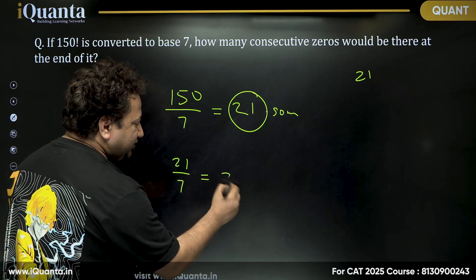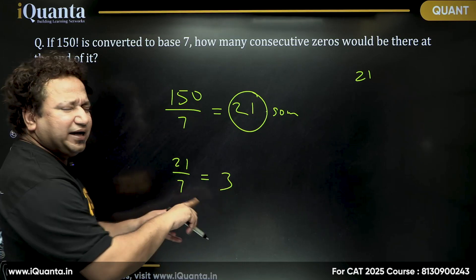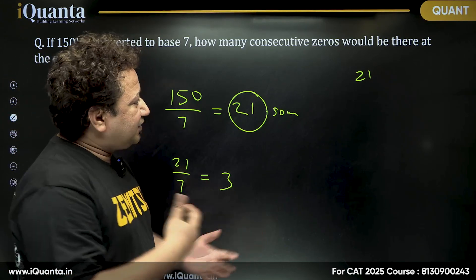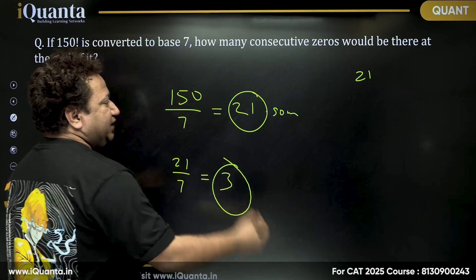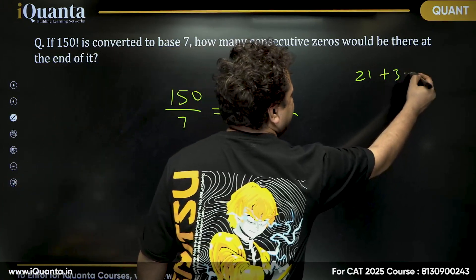Keep on dividing successively till it is possible to divide. 7 into 21 is 3, that's it. Now I cannot divide 3 by 7. I can divide, I'll get 0 point something, not an integral value. So I'll stop there. 21 plus 3, that is my answer, 24.